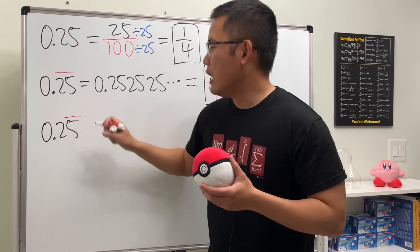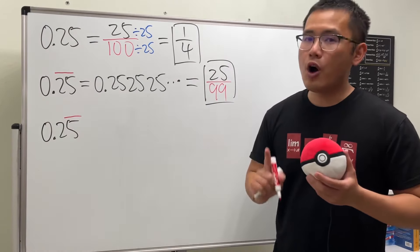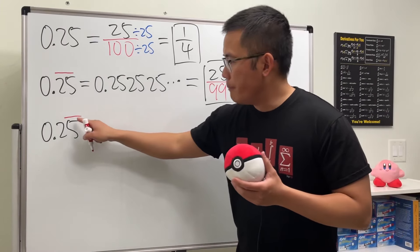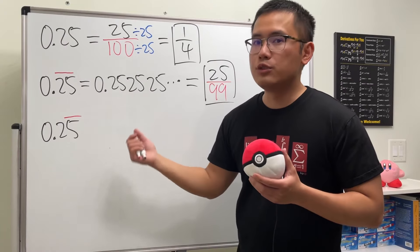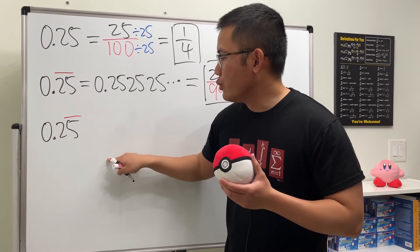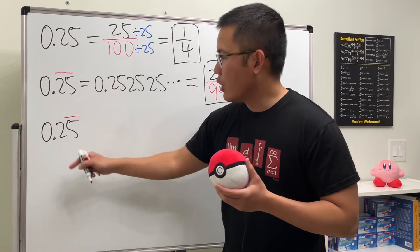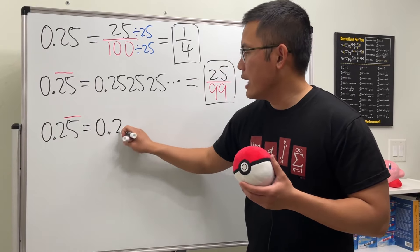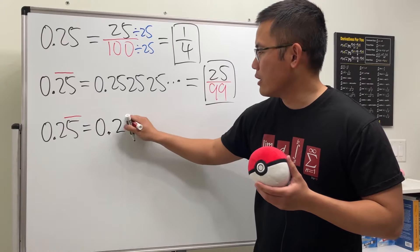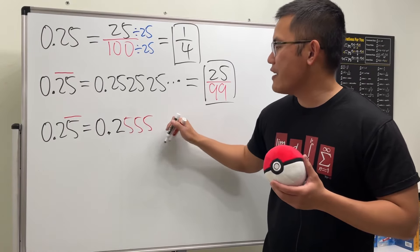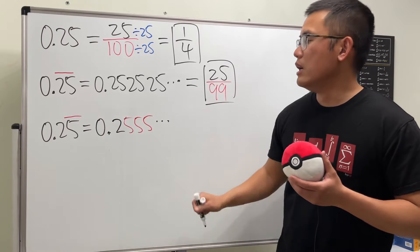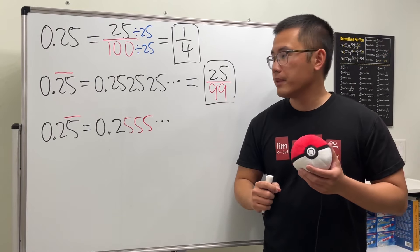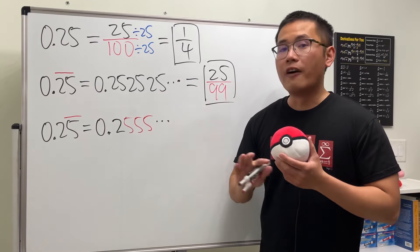What if we have 0.25 but the bar is on the five only? The bar tells you whatever digit is repeating. This time the 2 is not repeating, so this really means we have 0.2, and then five, five, five — infinitely many fives. You can see this and the previous case are very different.